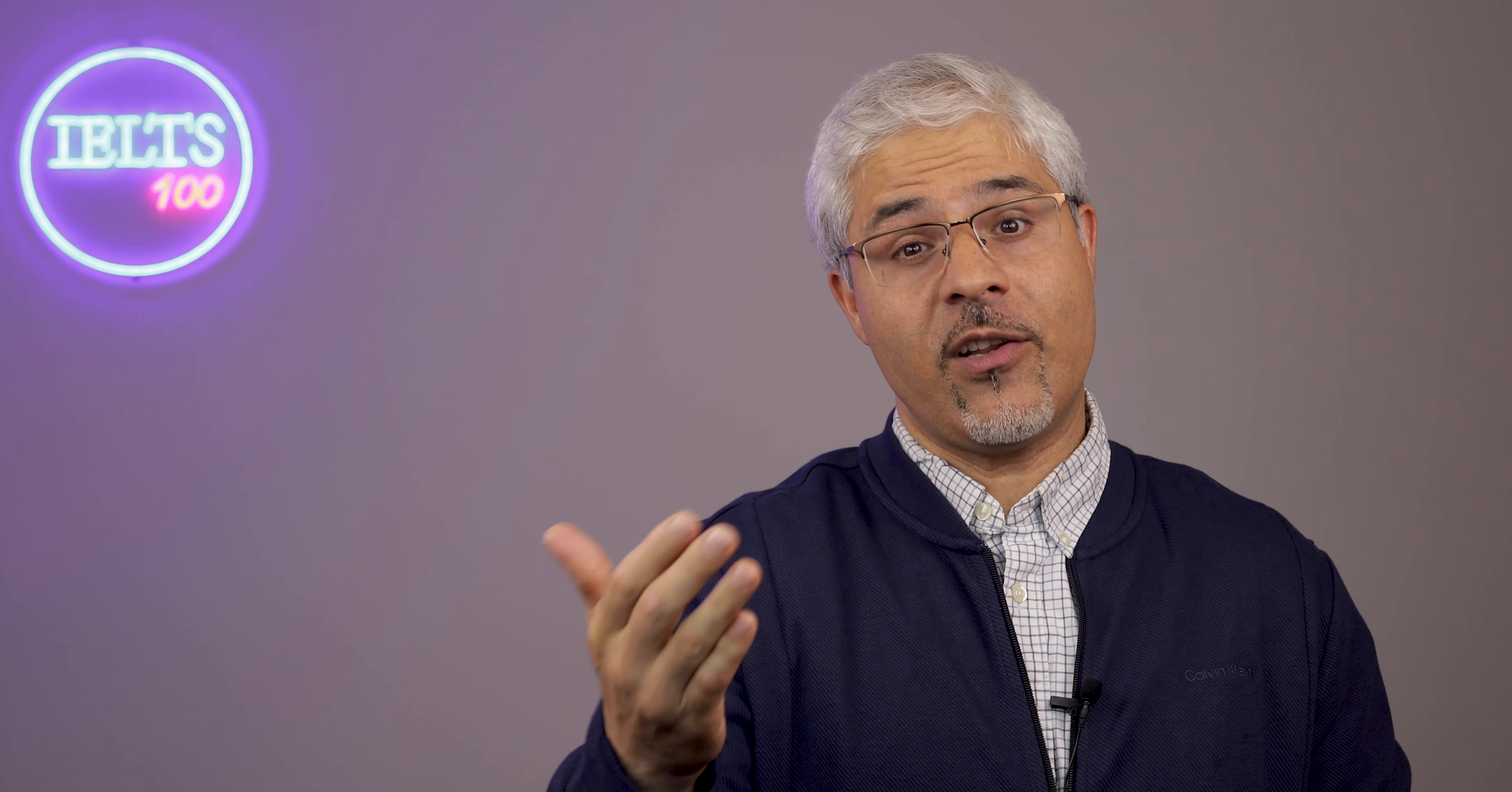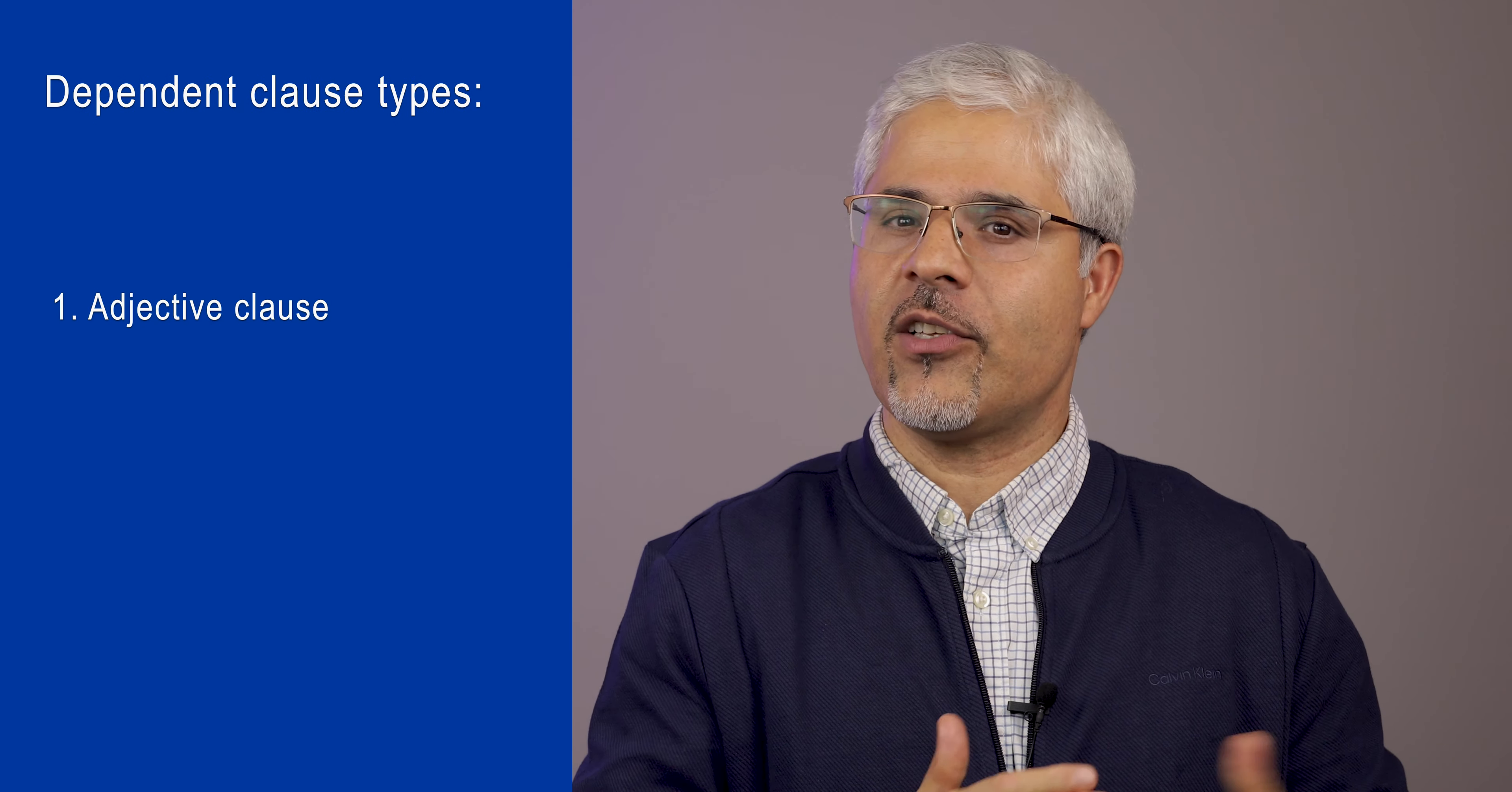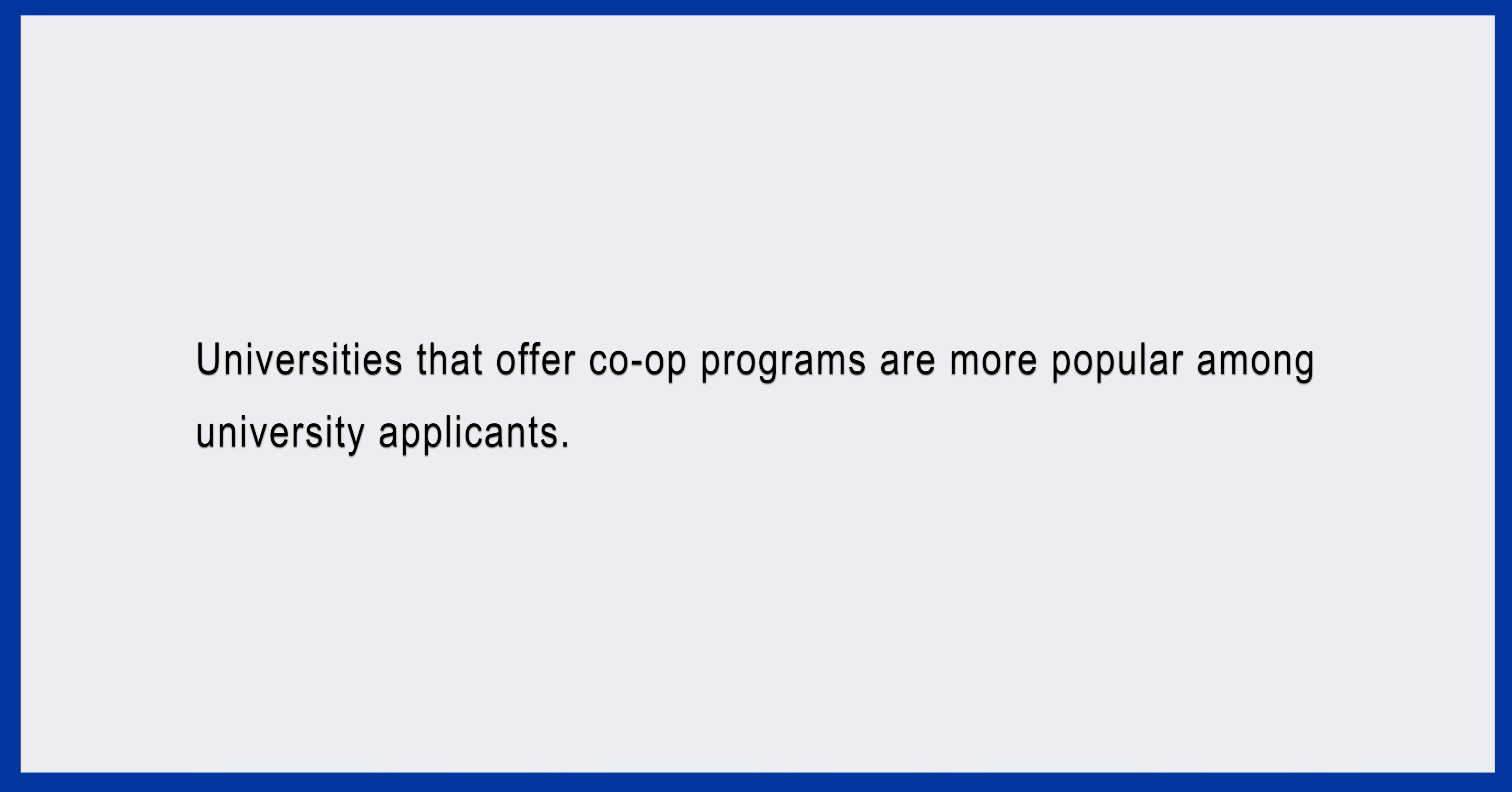First dependent clause type, adjective clauses. An adjective clause is a clause that follows a noun and provides some information about it. It is also called a relative clause. Here is an example. Universities that offer co-op programs are more popular among university applicants. In this sentence, 'that offer co-op programs' is an adjective clause that provides some information about the universities. In fact, it shows which universities are more popular.